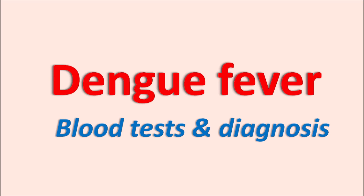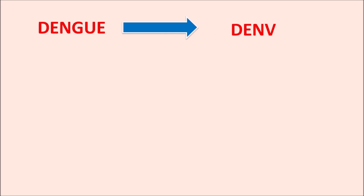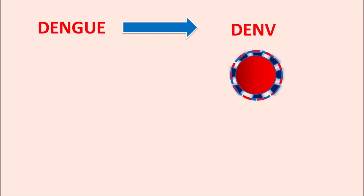Hi everyone. Today in this video we are going to discuss about dengue fever — what are the blood tests and diagnosis of dengue fever. Dengue fever is produced by the dengue virus, represented as DENV. This is an encapsulated virus belonging to the flavivirus family, with single-stranded RNA in the nucleus. These flaviviruses are encapsulated viruses and they can exist in different genotypes.